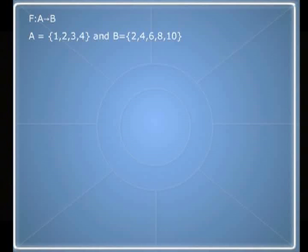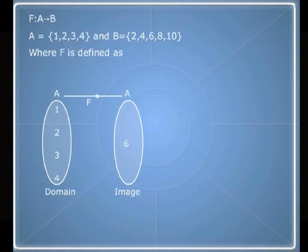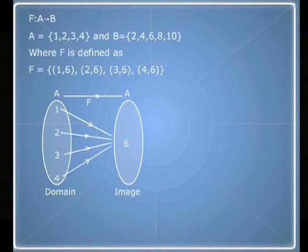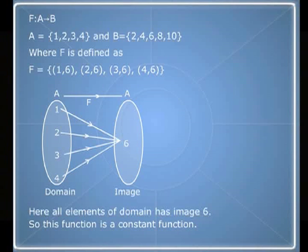Let us see an example. F is a function from A to B, where A is the set {1, 2, 3, 4} and B is the set {2, 4, 6, 8, 10}, and f is defined as the set of pairs {(1,6), (2,6), (3,6), (4,6)}. Here all the elements of the domain have the image 6, so this function is a constant function.